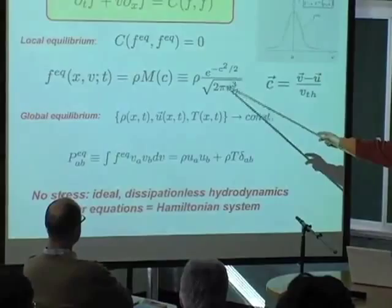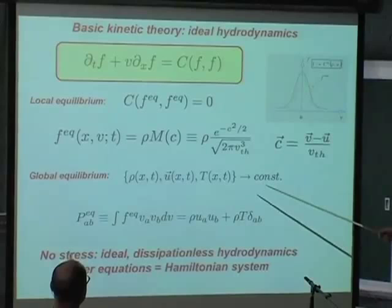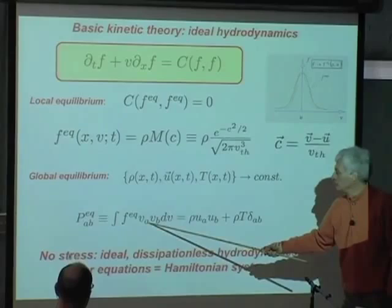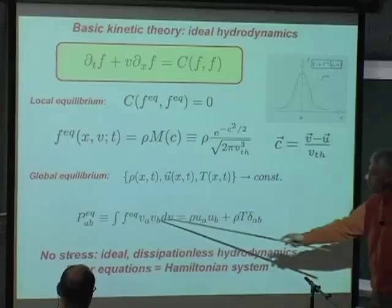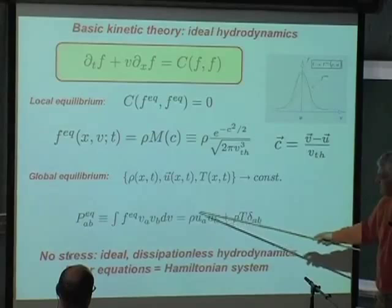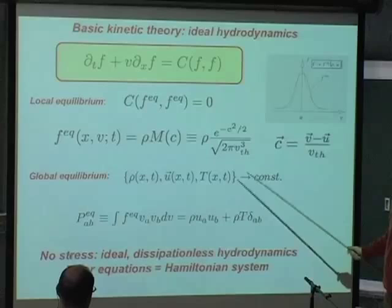Now you can do a little calculation. If I compute the momentum flux tensor — where A and B run over the Cartesian coordinates x, y, z — using this distribution, what I get is precisely the convection term, the macroscopic convection, plus the temperature term, which is diagonal. There is no term associated with any gradient. So this means that whenever the distribution function has the equilibrium shape, there cannot be any stress in the system.